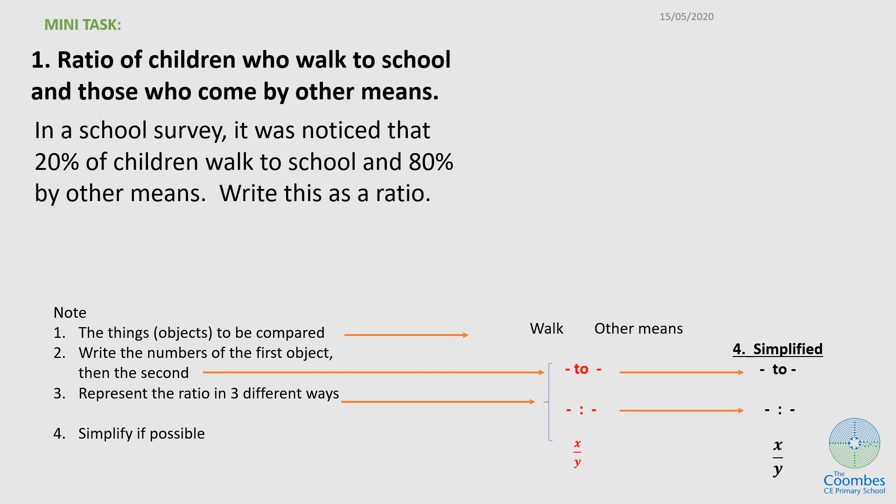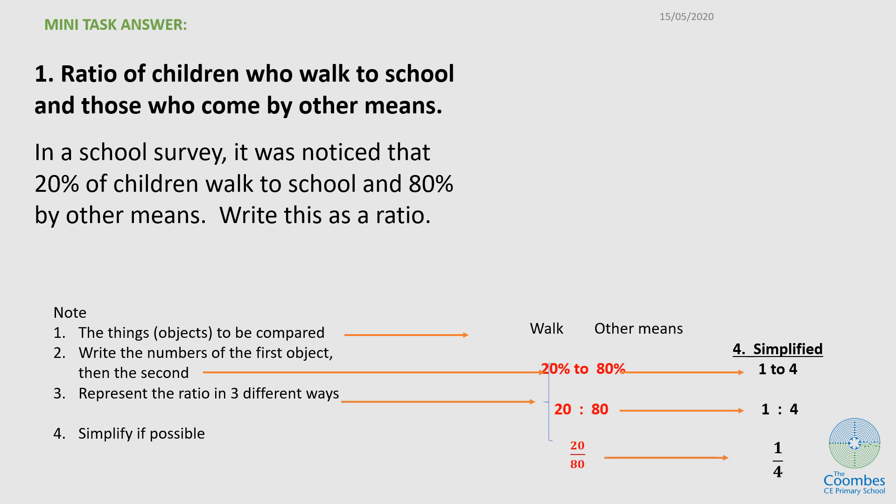What I now want you to do is pause the video and do this question. We'll look at it in the next slide. How did you do? Now the question was: in a school survey, it was noticed that 20% of children walk to school and 80% by other means. Write this as a ratio.